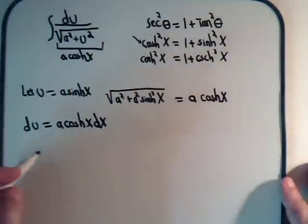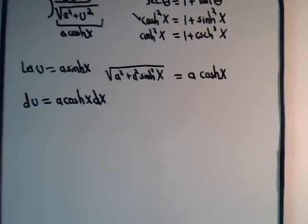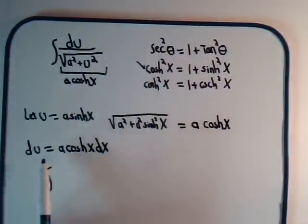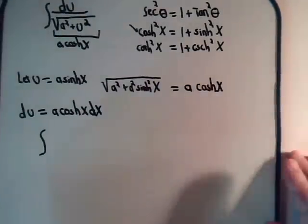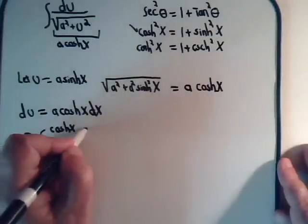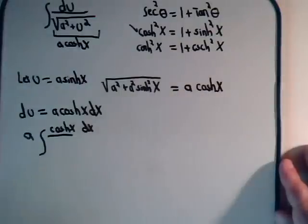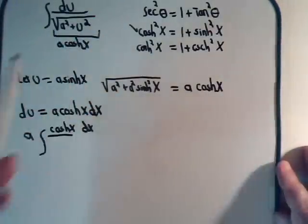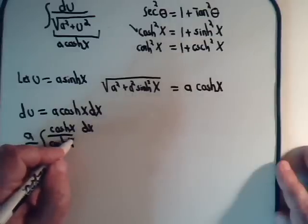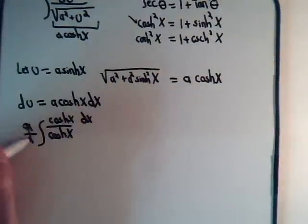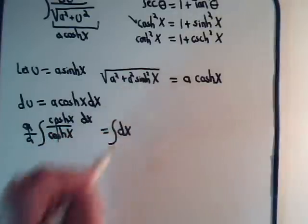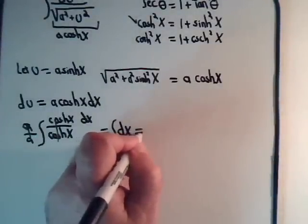We can now rewrite this entire integral. We have du — which is a times the hyperbolic cosine of x dx — divided by a times the hyperbolic cosine of x. Taking the a's outside, they cancel, leaving us with just the integral of dx. And obviously, that equals x.